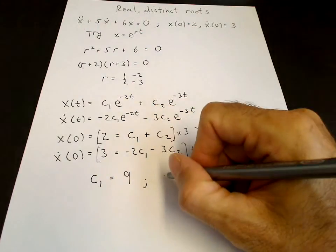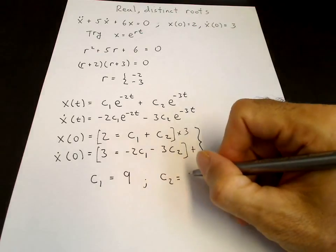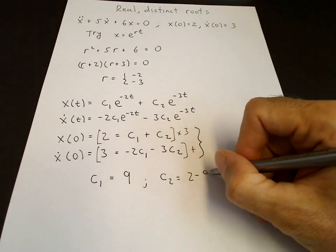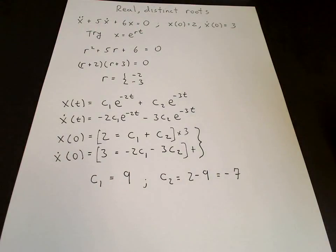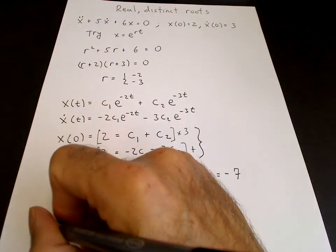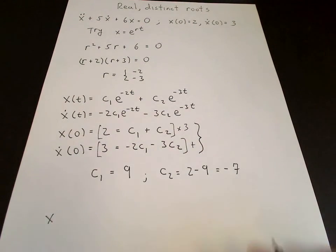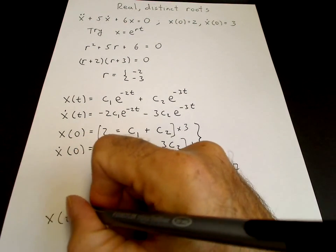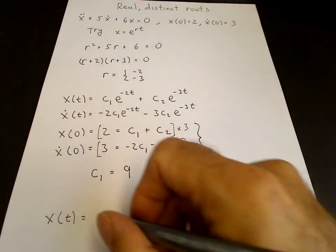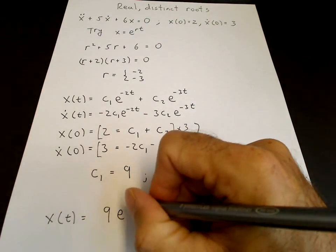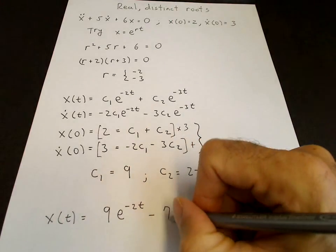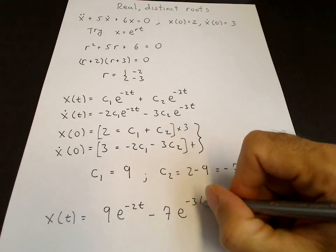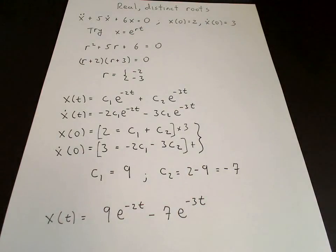And then we can use the first equation to solve for c₂ = 2 - c₁, which is 2 - 9 = -7. And that completes the solution. So we just write down the solution: x(t) = 9e^(-2t) - 7e^(-3t). Pretty straightforward.